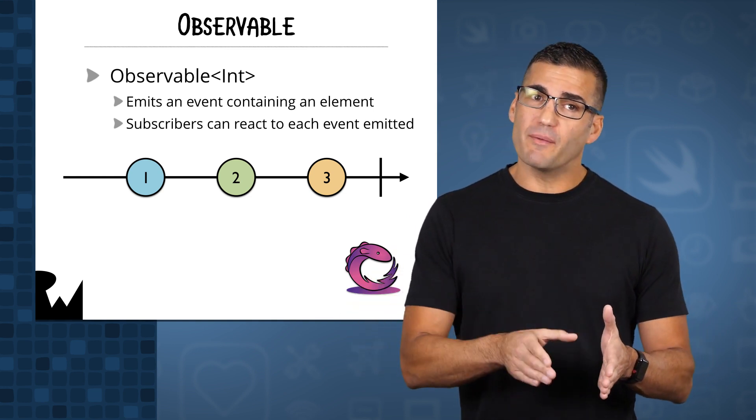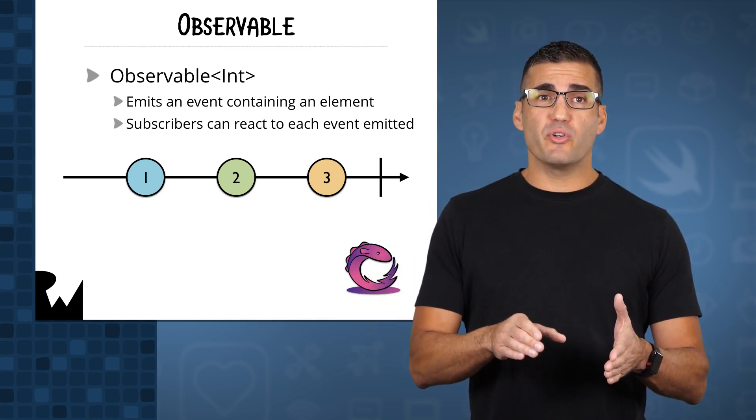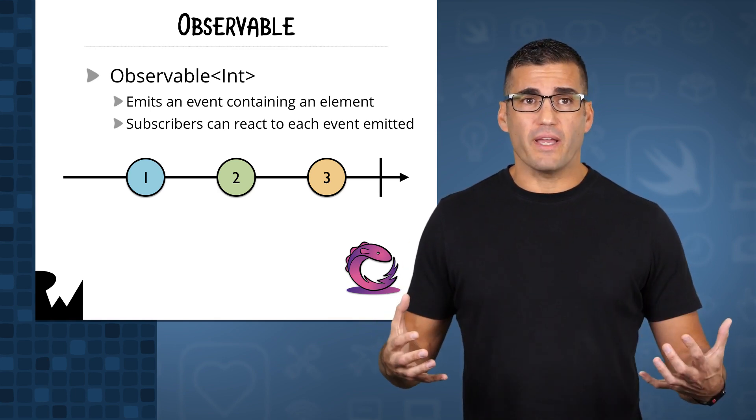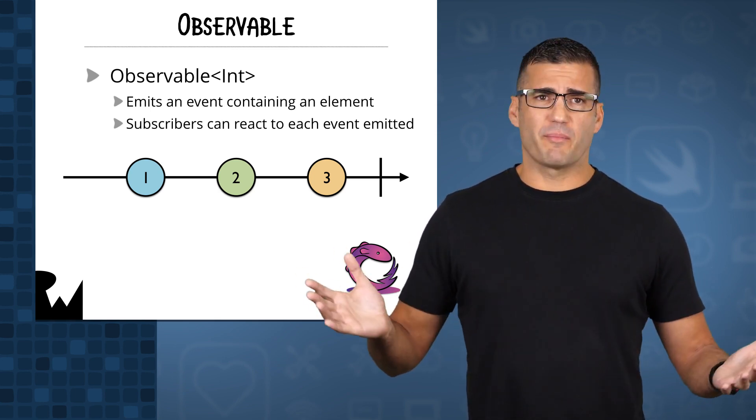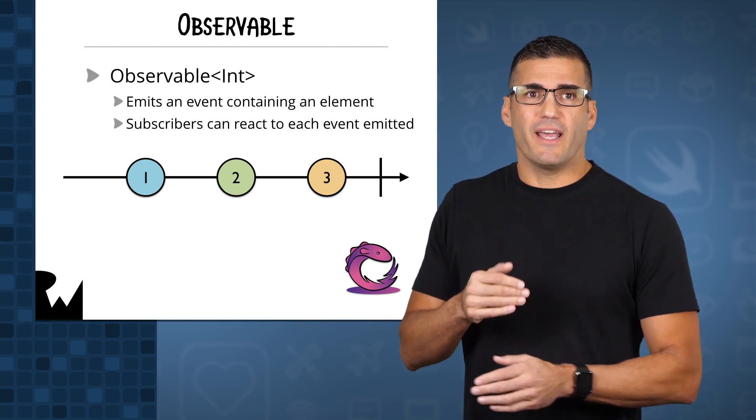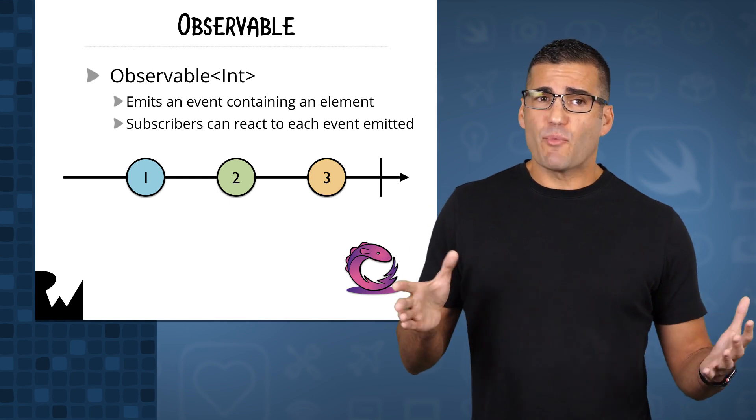So, every time an observable emits a new element, subscribers will have an opportunity to do something with that value or react to an event in some other way, such as to display an alert or something. That vertical bar represents the end of the line for that observable. It is terminated, and at that point, it cannot emit any more elements.